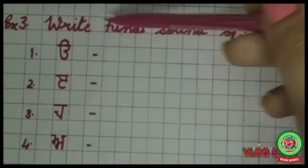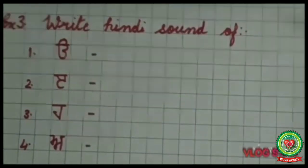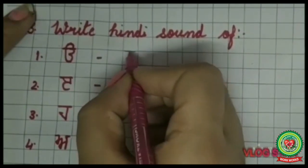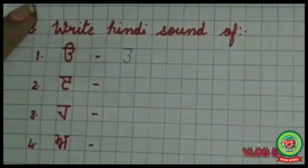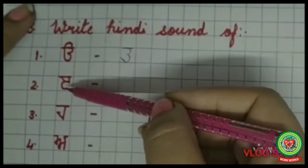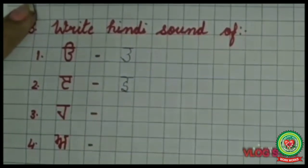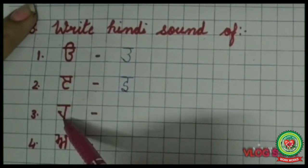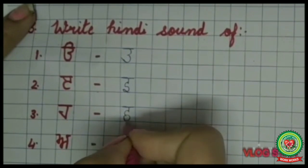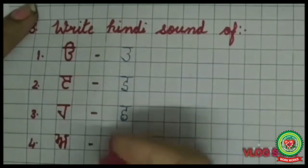The next exercise is 'Write Hindi sounds'. We have to write the Hindi sound of the given letters. First one is Oda — the Hindi sound of Oda is 'U'. Second one is Edi — the Hindi sound of Edi is 'E'. Third one is Haha — the Hindi sound of Haha is 'Hul'. Next one is Aira — write its Hindi sound.